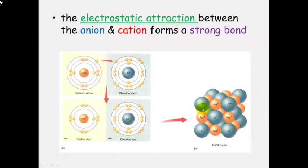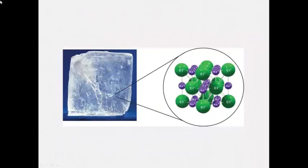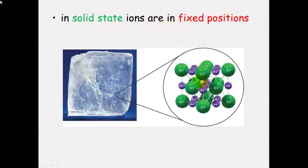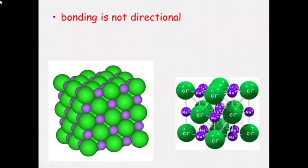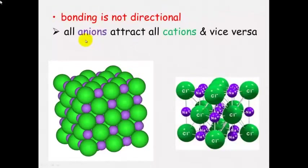The positive and negative ions form a crystal lattice structure of alternating positive and negative ions. This is what the structure looks like in a crystalline solid — for example, a grain of salt. In the solid state, these ions are in fixed positions and cannot move because of the strong electrostatic attraction. They are packed into very regular three-dimensional networks of alternating positive and negative ions. The bonding is not just in one direction — all anions attract all cations and vice versa.